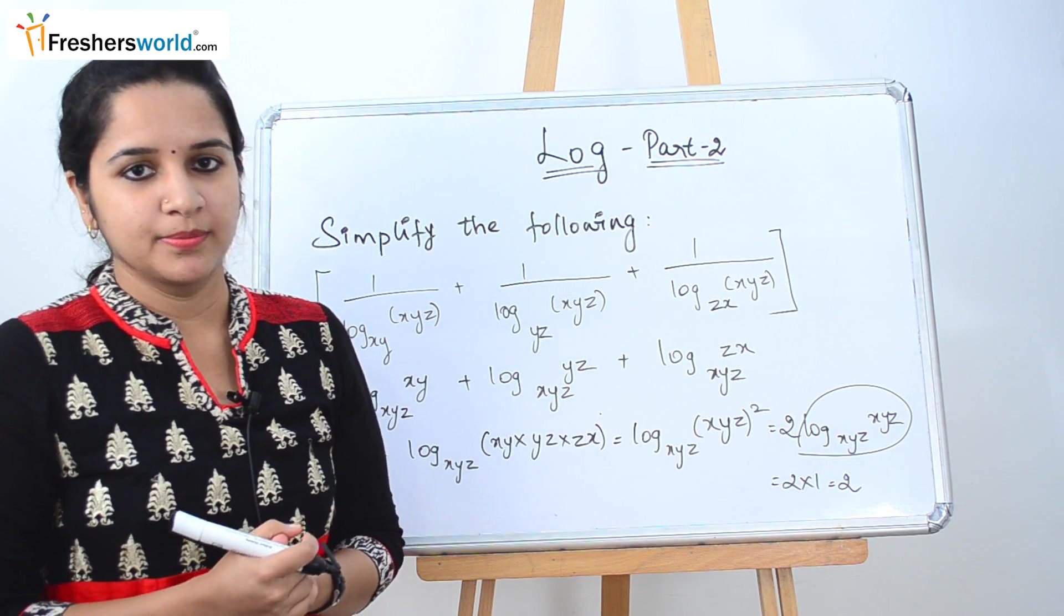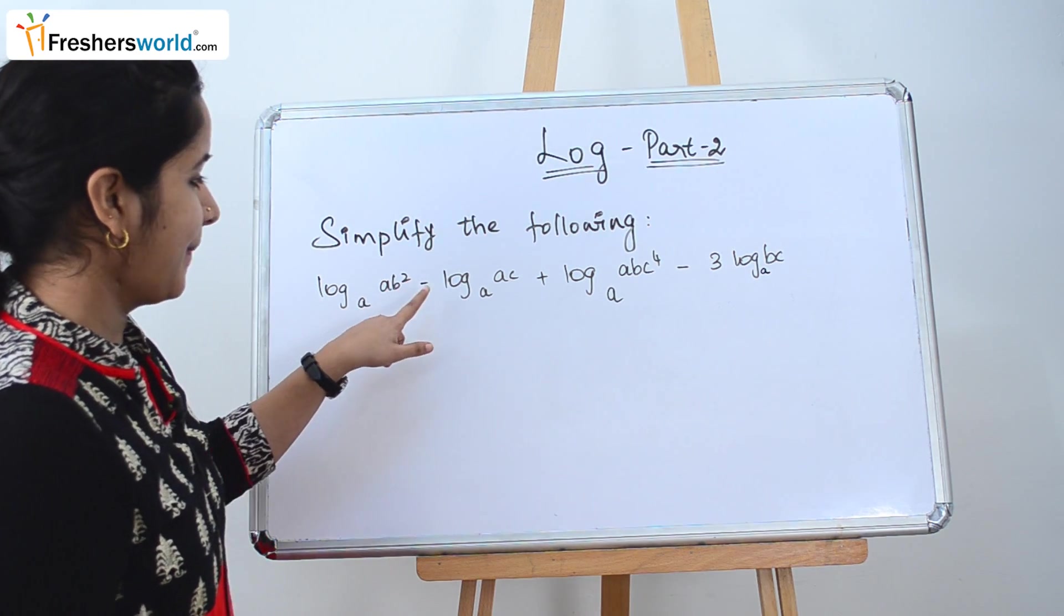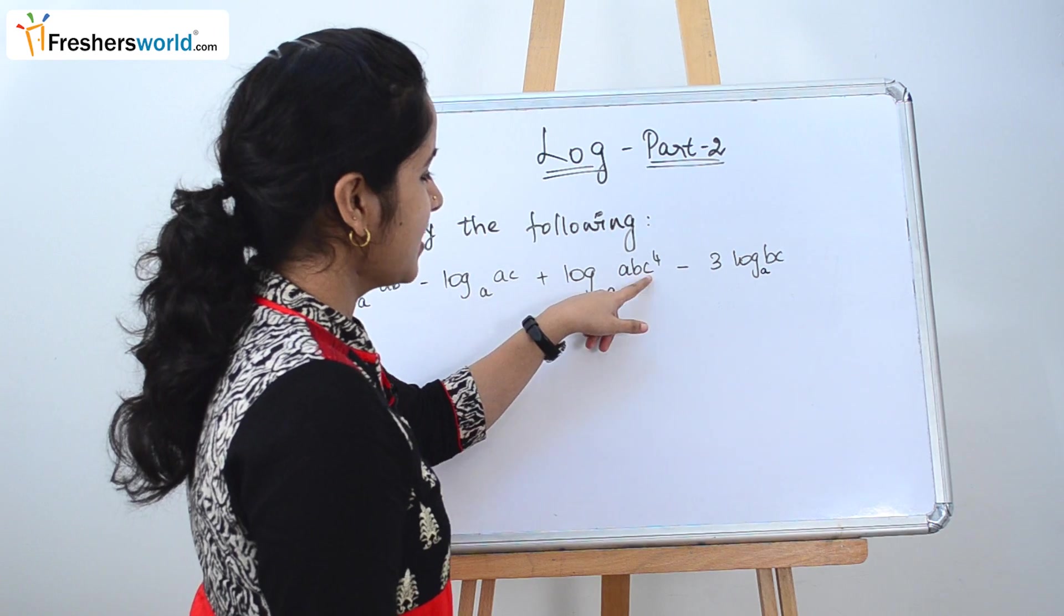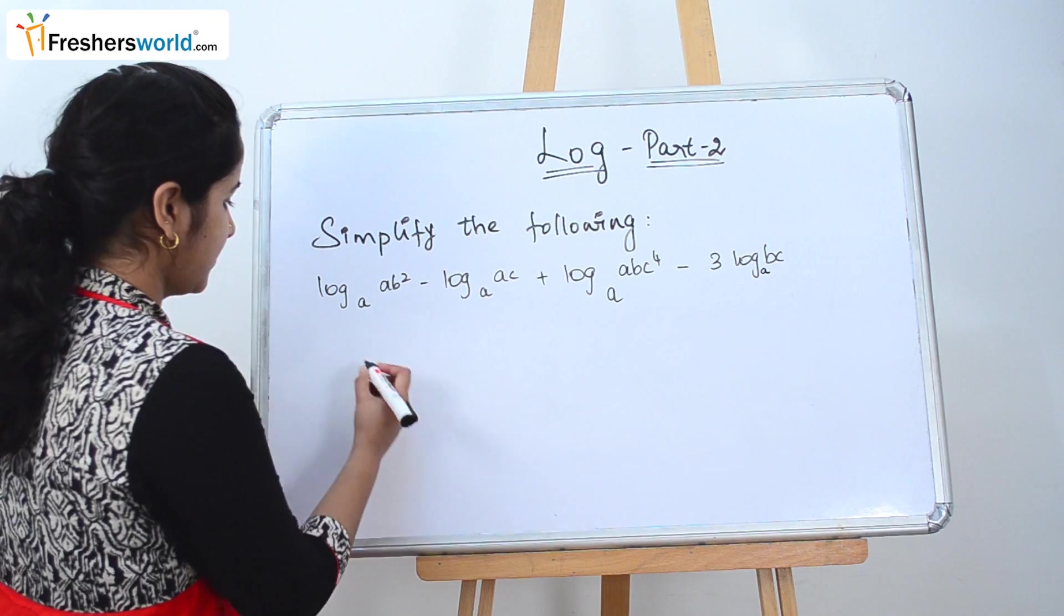So let's go to another problem. The next question that they have given is log_a(ab²) - log_a(ac) + log_a(abc)⁴ - 3log_a(bc). So we have to simplify this.